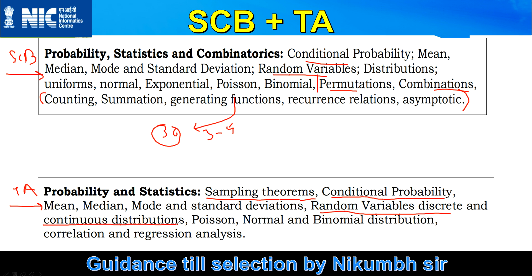For Technical Assistant A, you need basic signals and systems knowledge to understand discrete and continuous random variables. Without signals and systems knowledge, you cannot understand this topic properly. No one else will tell you this — so remember: if you are filling the Technical Assistant form, you must have basic signals and systems knowledge. That signals and systems content is also included in the Scientist B syllabus.